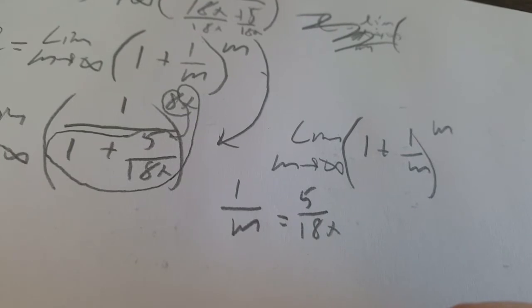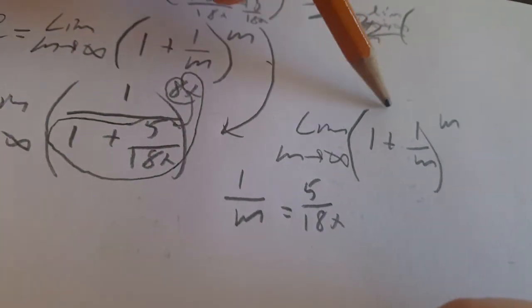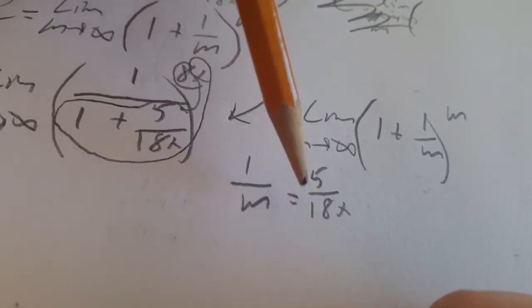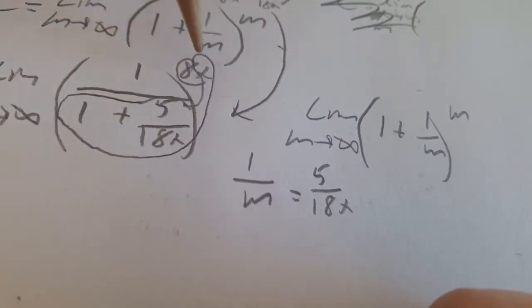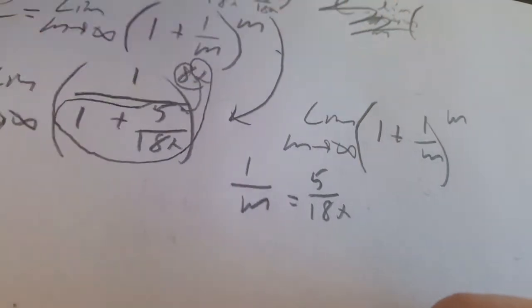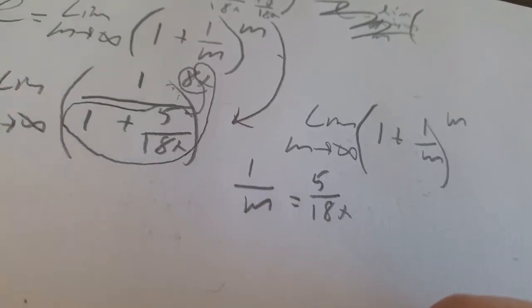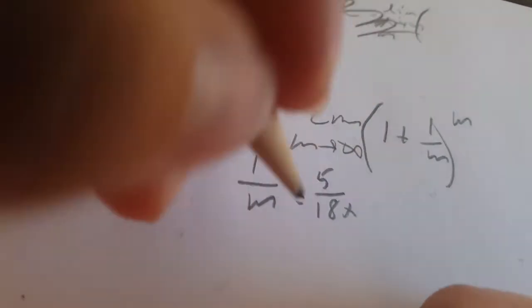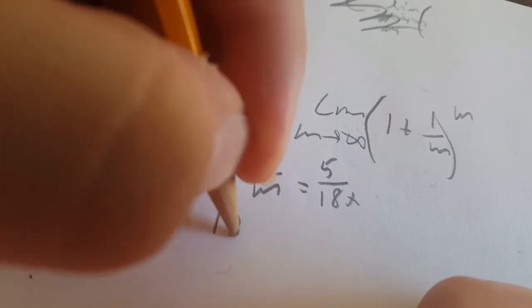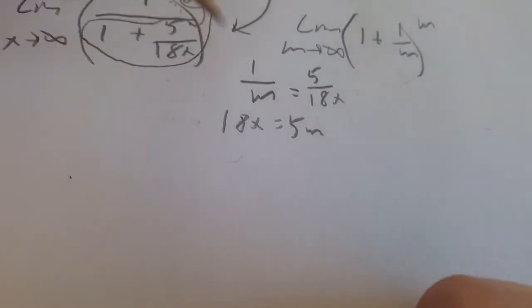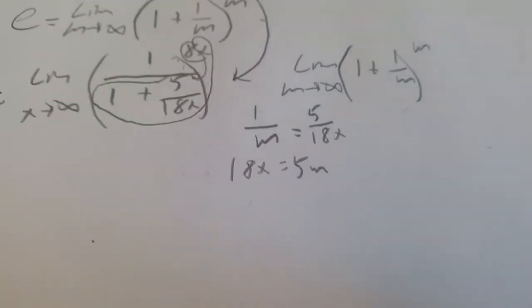Now, what we have to do is figure out what m will be proportional to this, 8x. So, we can solve for that, so that we can use the limit correctly. So, if we cross multiply, we'll get 18x equals 5m. Now, what we have to do is figure out what to divide by on this side to get 8x, so that we can use the limit.